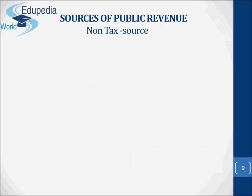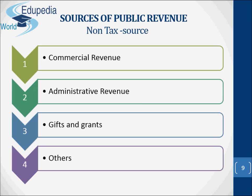Concerning non-tax revenue, we have commercial revenue — for example, income from public property and enterprises. There is also administrative revenue, gifts and grants, and others. Commercial revenues are income earned by public enterprises by selling their goods and services — for example, payments for postage, tolls, interest on borrowed funds, etc. They are also known as prices because they come in the form of prices of goods and services provided by governments.